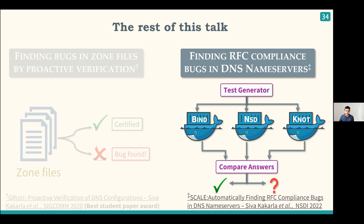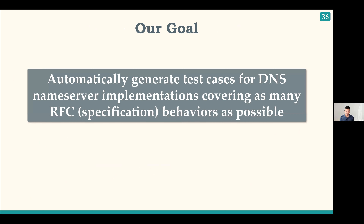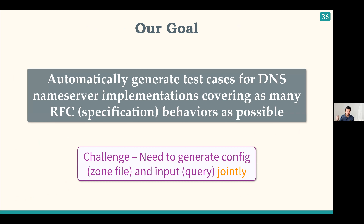Now let's look at the second project. There are many DNS implementations out there — open source implementations that have been around for 20 years, and each cloud has its own: Akamai, Google, Amazon, and Azure all have their own DNS implementations. Our goal is to check if DNS name server software is compliant with the RFCs by generating test cases automatically while covering RFC behaviors. The challenge is that a test case consists not just of a query but also of a DNS name server configuration zone file, and you need to generate both together.